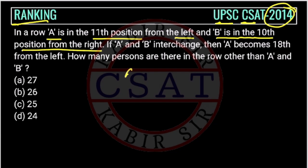So A's position is 11th from the left, and B's position is 10th from the right. This is the right hand side.